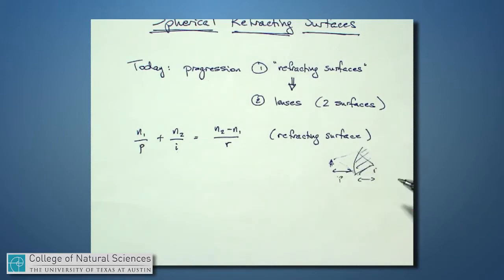the object distance p, the image distance i, all of those are related and connected through the index of refraction. We'll go through the explanation of that equation quite a bit more in the future, so don't worry if it doesn't make exact sense right now.